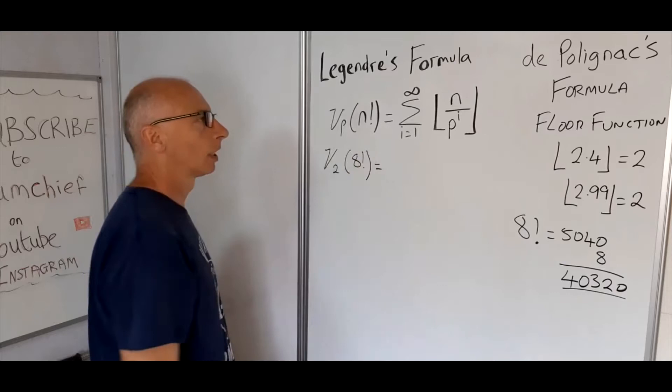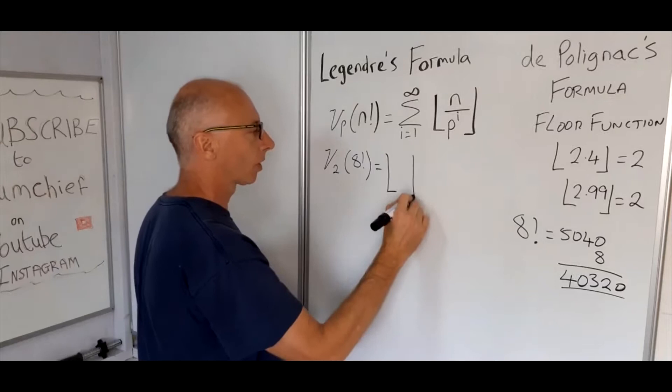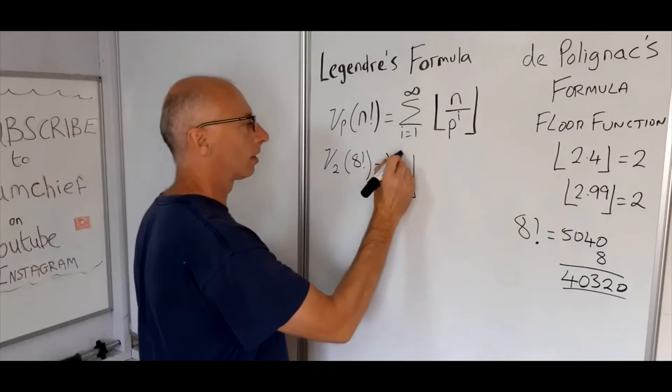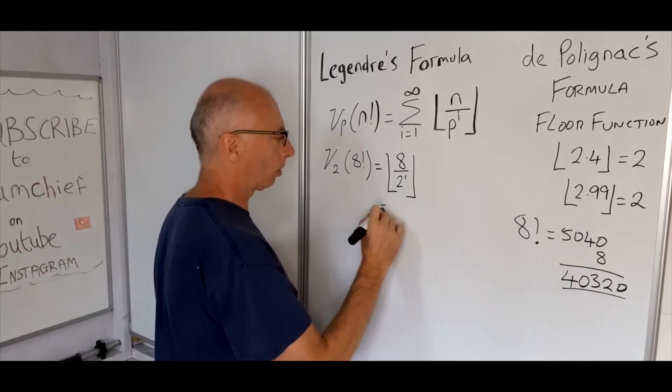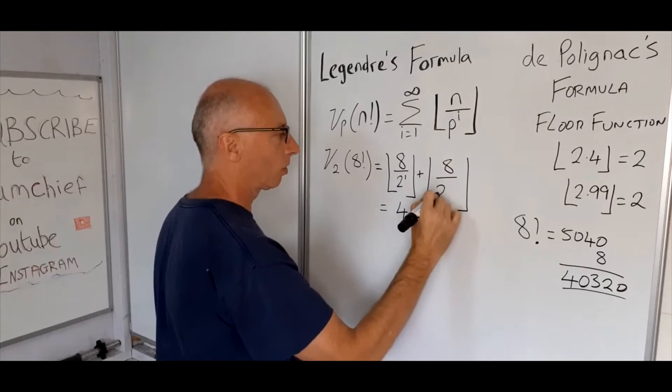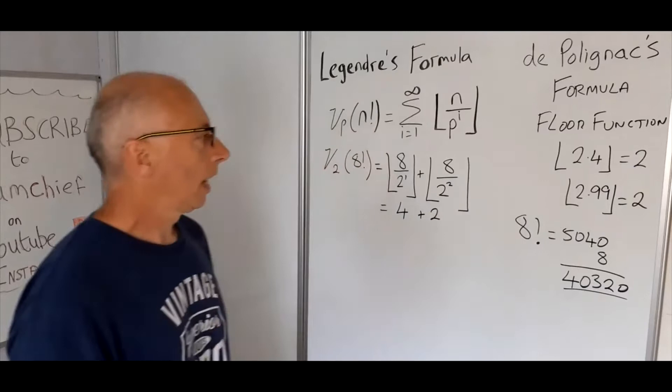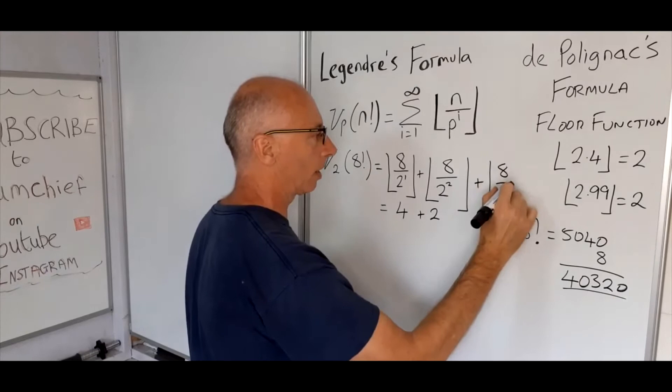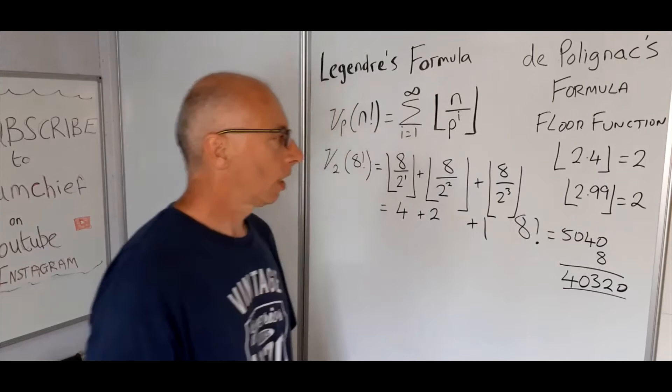So we're going to try nu_2 of 8 factorial. Now we're going to sum all the floor functions of n divided by p to the power of i. So take the floor function of n, n in this case is 8, divide that by the prime number, so our prime number is 2, and i is 1, so 2 to the power of 1. That will equal 4. It's a summation, so we need to keep going. Floor function 8 divided by 2, now we need the number 2, that's going to be 8 divided by 4, so the floor of that is going to be 2.